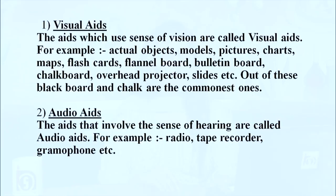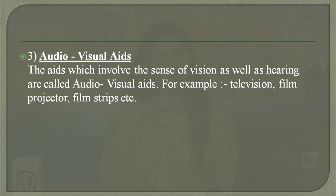Audio aids involve the sense of hearing — for example, radio, tape recorder, gramophone, etc. The third type is audio-visual aids. As is clear from the two words 'audio' and 'visual,' these are aids which involve the sense of vision as well as hearing. Examples include television, film projector, film strips, etc.